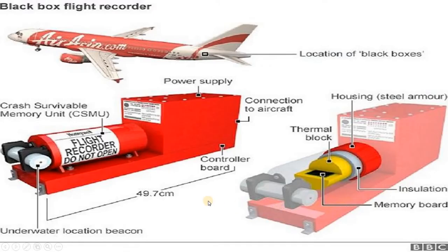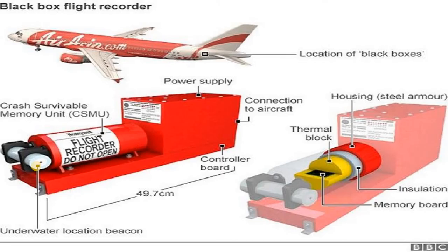Moving forward, how does the flight data recorder look? Dear students, the location of the black boxes — the flight data recorder and the cockpit voice recorder — is in the root of the vertical tail. In the flight data recorder, the crash survival memory unit, which is the actual memory unit that records the data, is in this form. Here we are having the underwater locator beacon, which transmits a signal if the aircraft is crashed into a deep sea, so that the rescue operation can be done to reach that location.